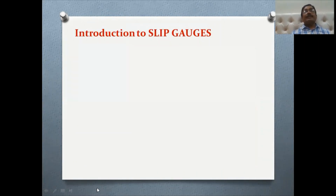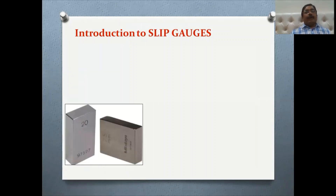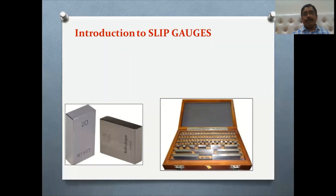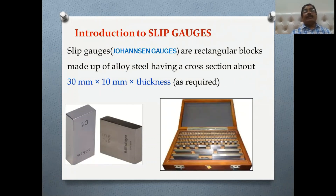This is the introduction to slip gauges. A slip gauge looks just like a rectangular piece. This is a complete set of slip gauges in a box, which contains 45 pieces — even 87 pieces or 105 pieces are available. Slip gauges were designed by Johnson, and that's why they are also called Johnson gauges.